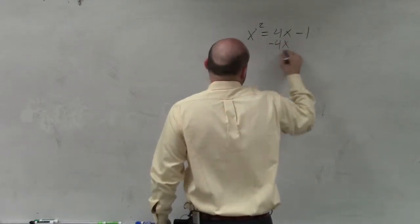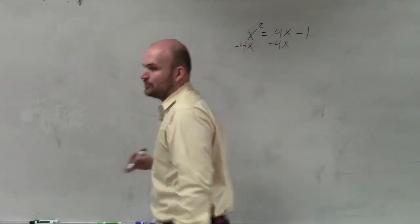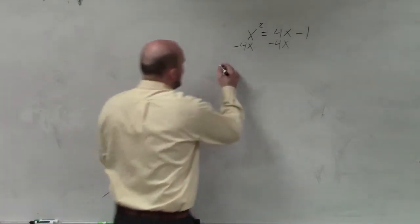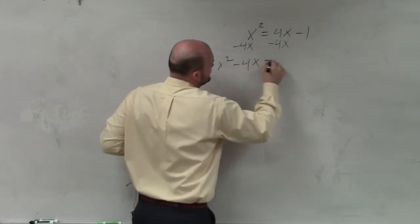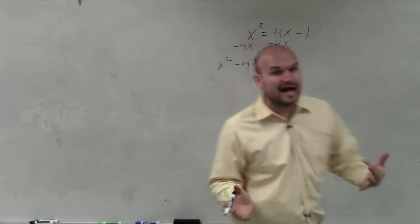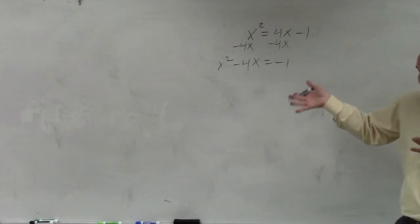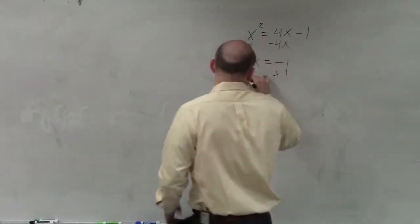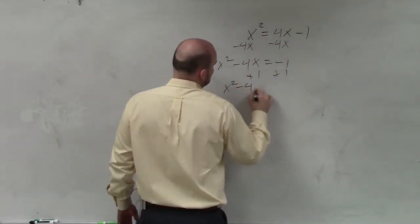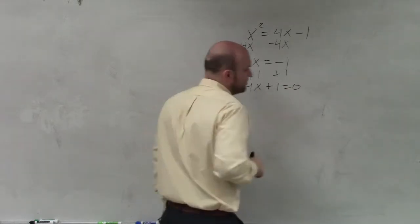So the first thing I'm going to do is subtract 4x on both sides. Does that make sense? Because by subtracting the 4x on the other side, now I have x squared minus 4x equals negative 1. Now, again, I still need to set this equal to 0. So I need to get rid of the 1. So I have x squared minus 4x plus 1 equals 0.